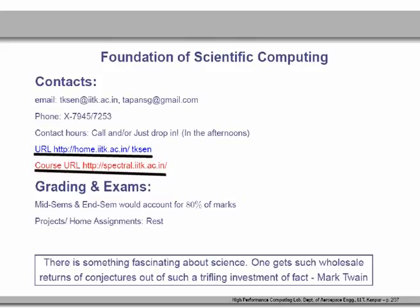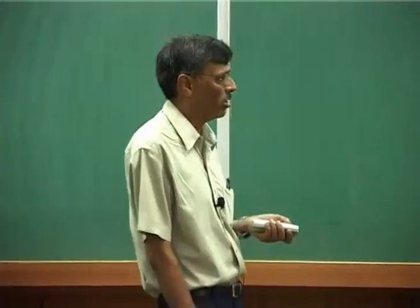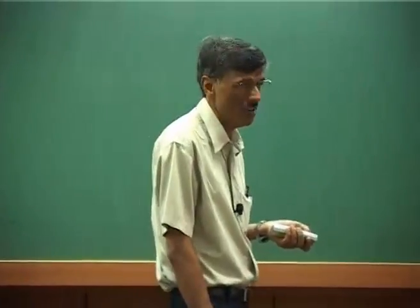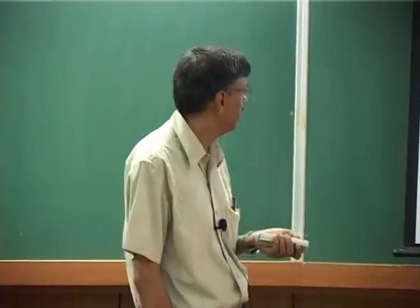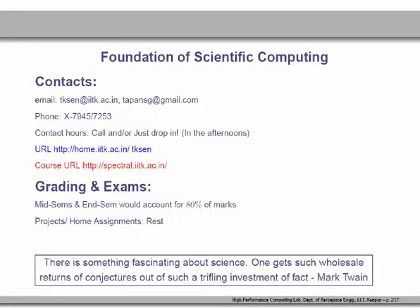Please make a note of the course URL set up on a server called spectral.iitk.ac.in. We will load some material from time to time for a short while — maybe for a week or so — and then download it. As far as grading and exams are concerned, it is fairly straightforward. It will depend mostly on your mid-semester and end-semester exams, which should account for 80 percent of your total grade. We will also do some projects to account for the remaining 20 percent.